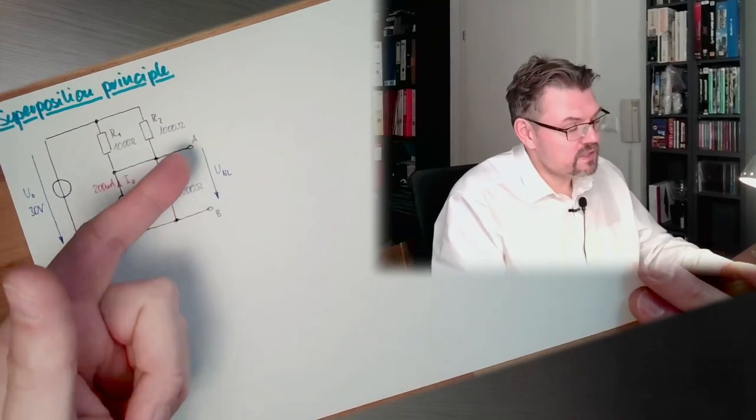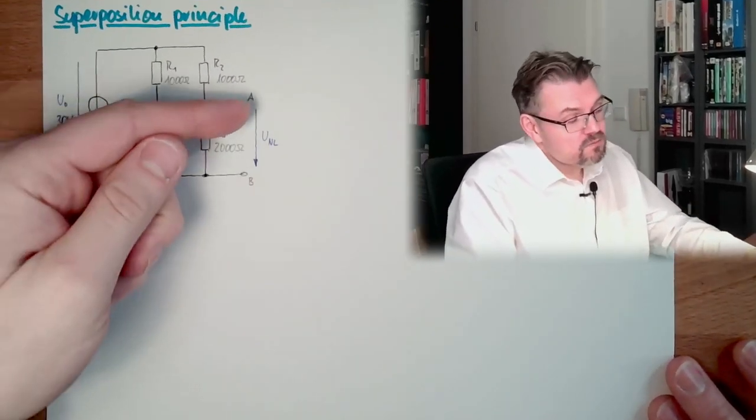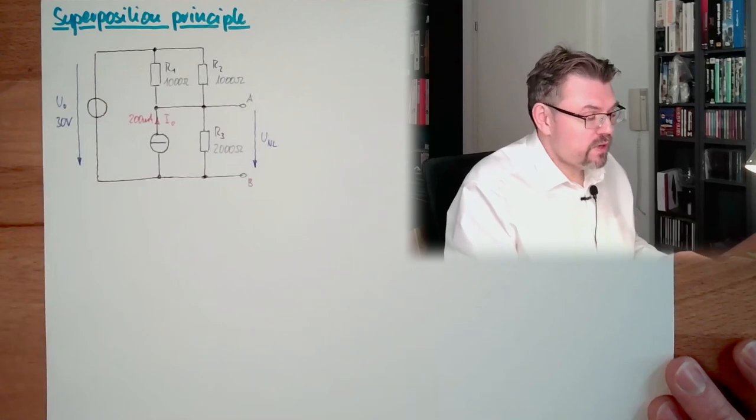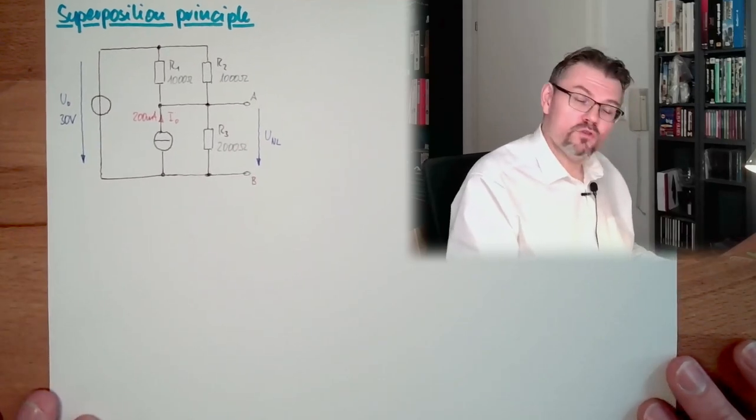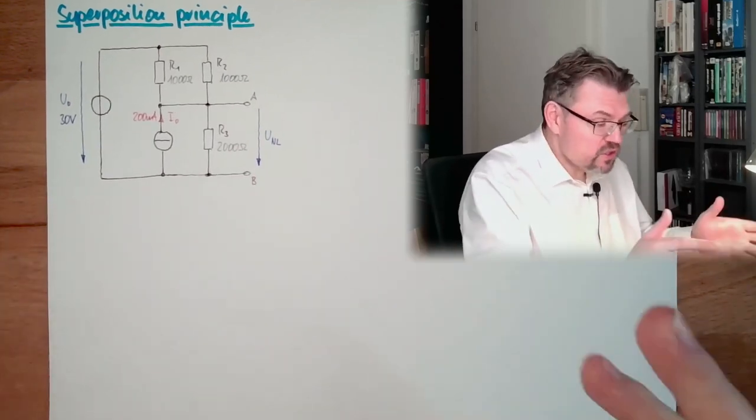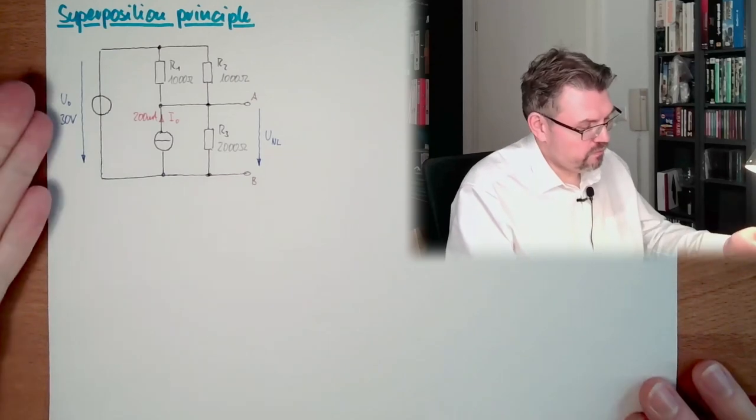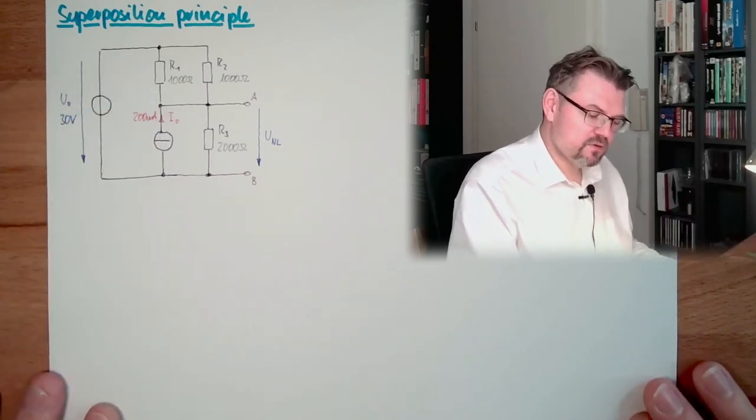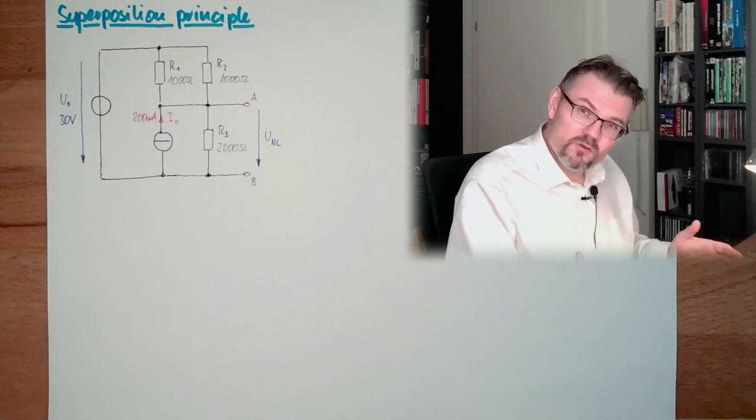We're interested in how much would be the no-load voltage at those two connectors, A and B, between those two. How much would that be in this situation? We have here 30 volts, we have here 200 milliamps source. And what to do?